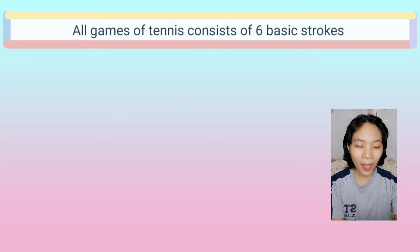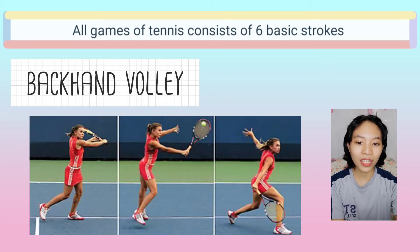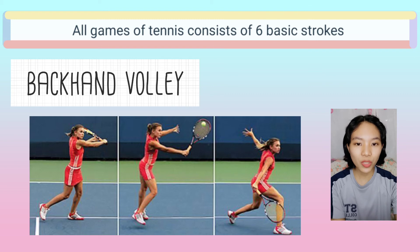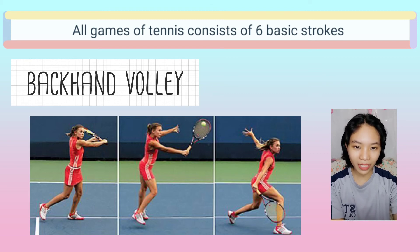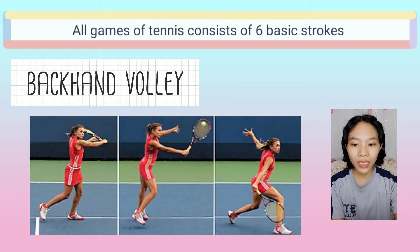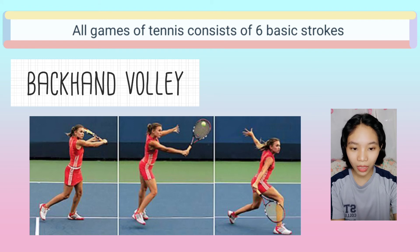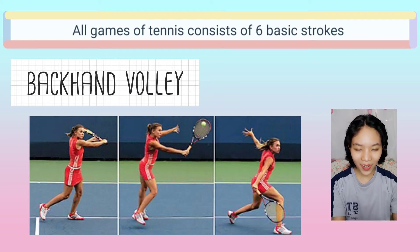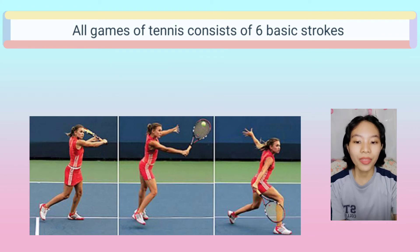Backhand Volley. The backhand volley is the other type of volley, just like the forehand volley. It's usually hit quite close to the net. Similar to a single-handed backhand ground stroke, the backhand volley is hit using your dominant arm, with the back of the hand facing away from your body as you grip the racket and make contact.